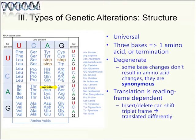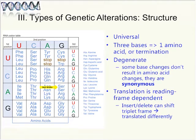Translation is reading frame dependent. If you shift the reading frame by inserting or deleting a number of bases that is not a multiple of three, then everything after that point is translated into different amino acids because the codons are shifted. This is known as a frameshift variant or frameshift mutation.